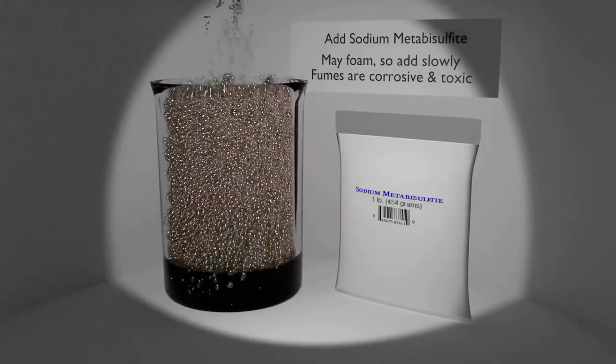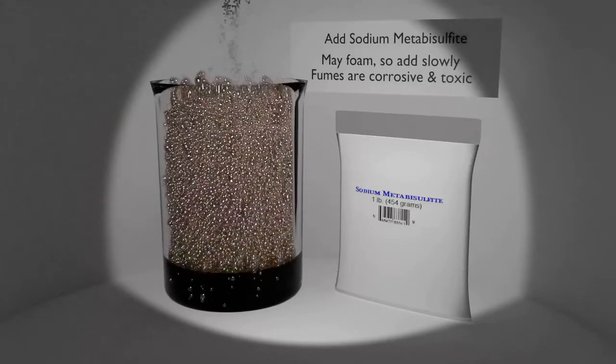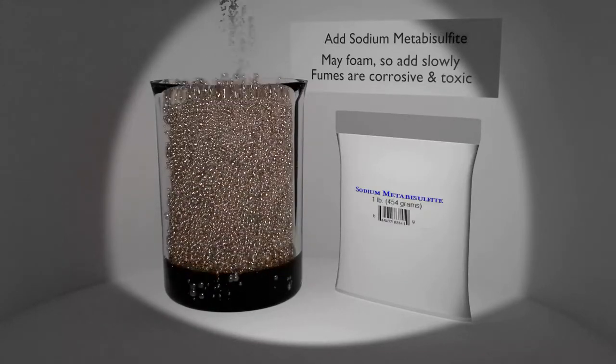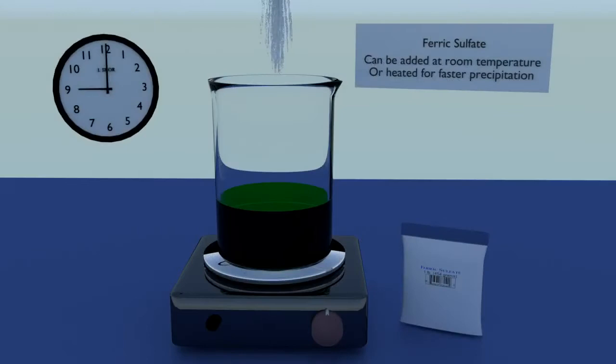Ferric sulfate: this is an odorless precipitant that can be employed at room temperature, or the solution can be heated for more rapid precipitation.